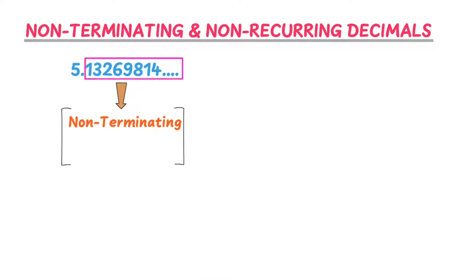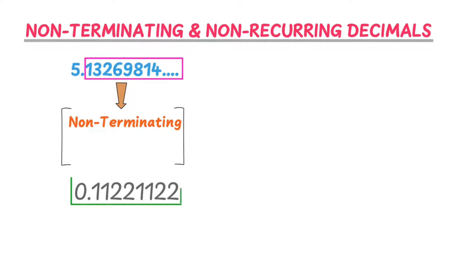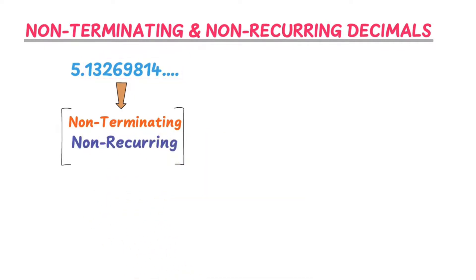Secondly, the digits in the decimal part do not follow a specific pattern — like 0.1122112 and so on — so we also call it non-recurring digits. This number is an example of a non-terminating and non-recurring decimal.